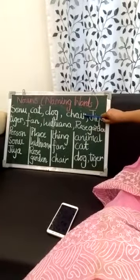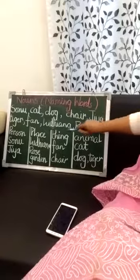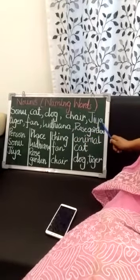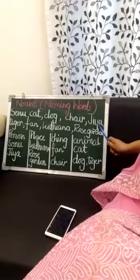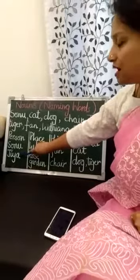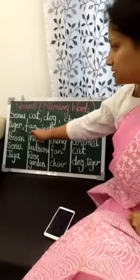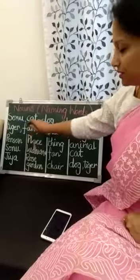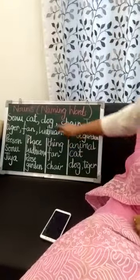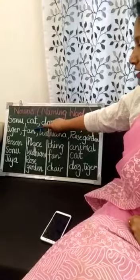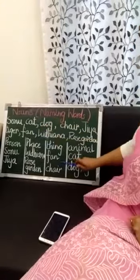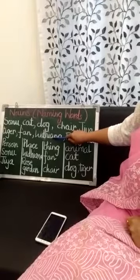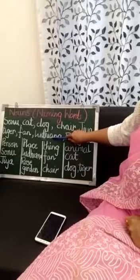Chair — it is a thing. Chair. Then Jia — it is the name of a girl, a person. Jia. The next is Tiger. It is an animal. Tiger. Fan — fan is a thing. Here. Then Ludhiana — Ludhiana is the name of a city, a name of place.